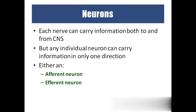A nerve carries information to and from the brain, but any individual neuron can carry information only in one direction. There are two types of neurons: afferent neurons, which carry information towards the brain (sensory neurons), and efferent neurons, which carry information away from the brain (motor neurons).